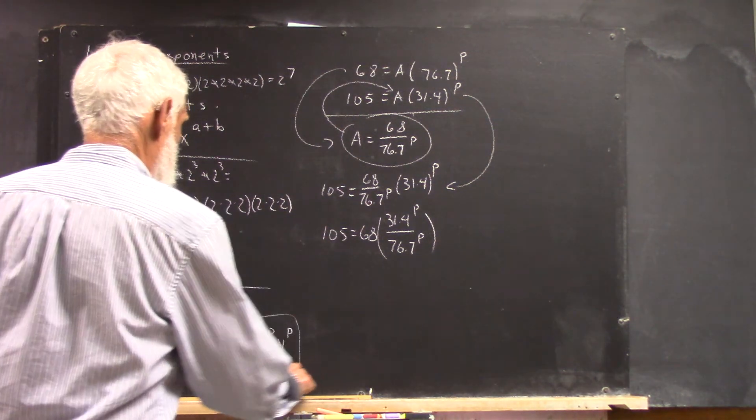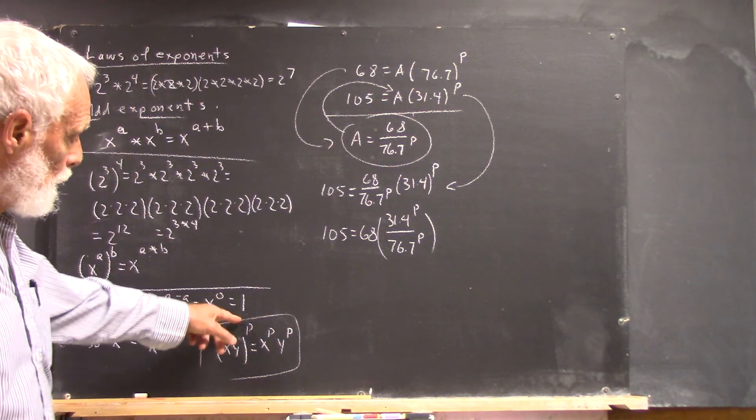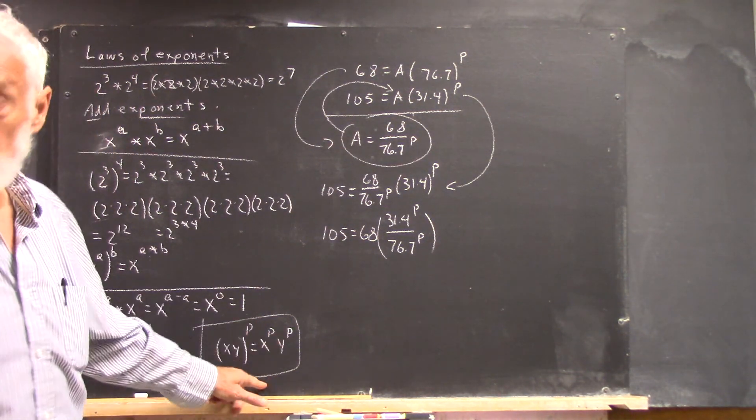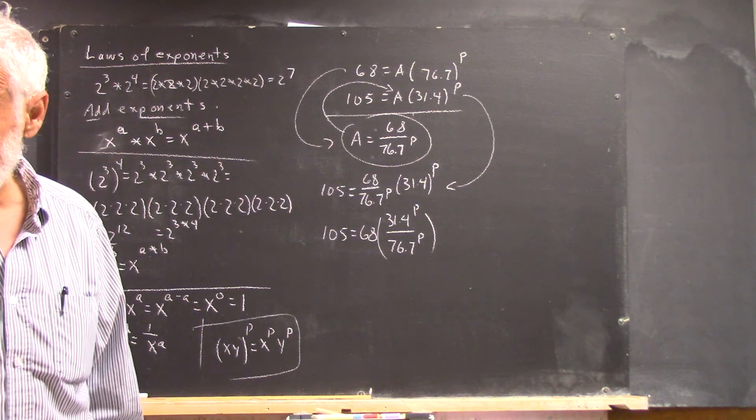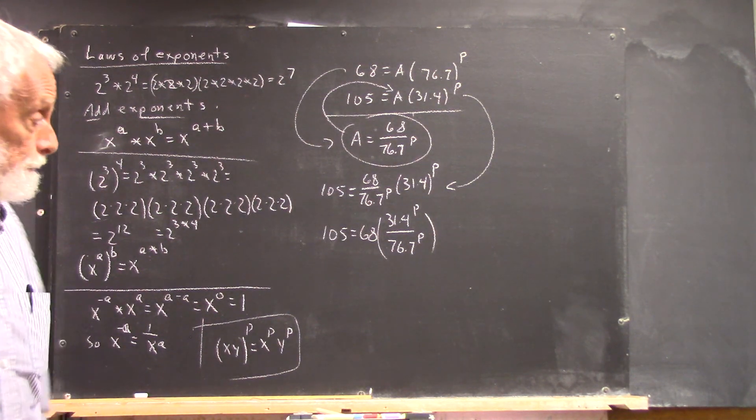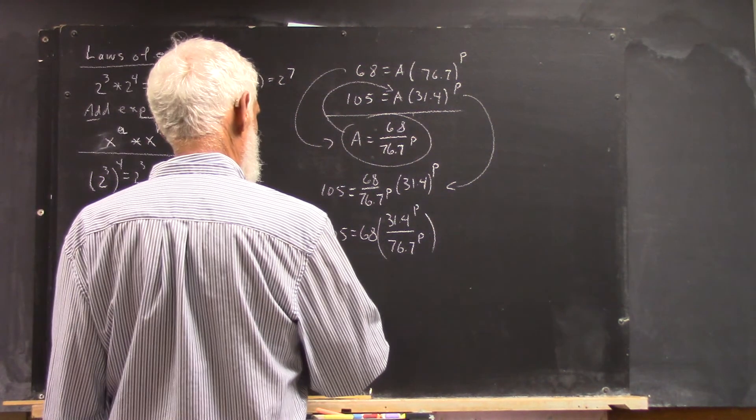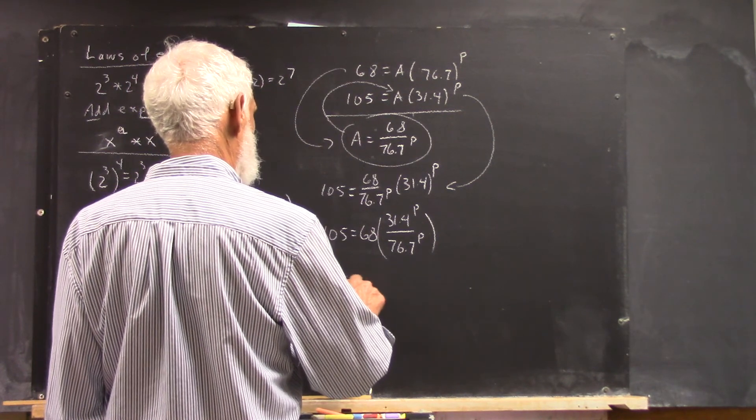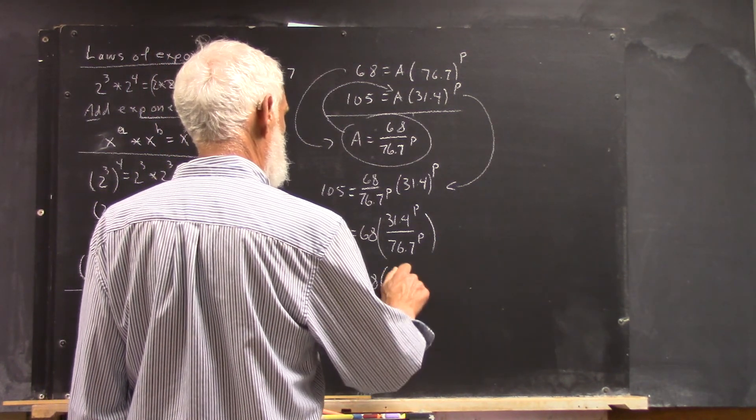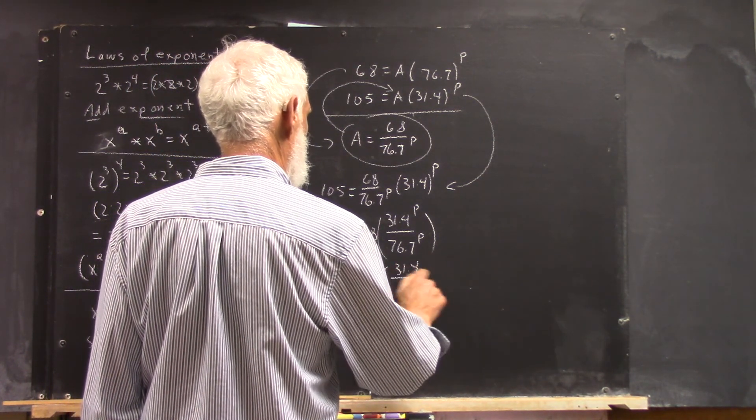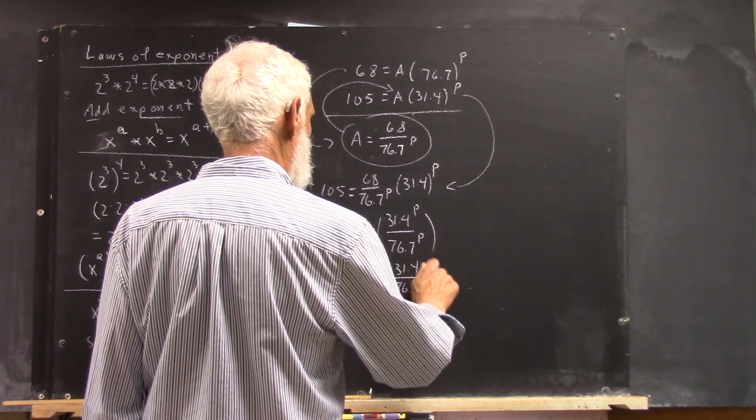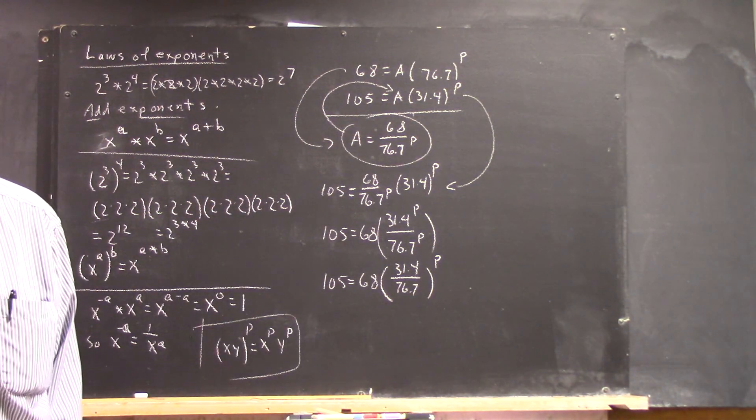And if it was X divided by Y to the P, it would be X to the P divided by Y to the P, right? Okay? Well, that means I can write this as 105 equals 68 multiplied by 31.4 over 76.7, all raised to the P, right?